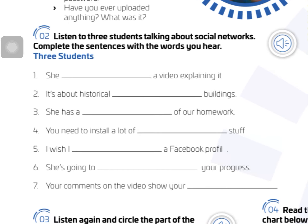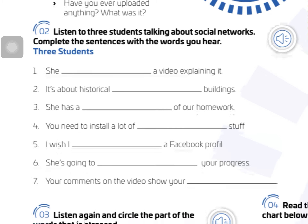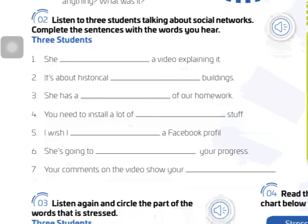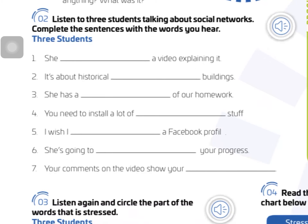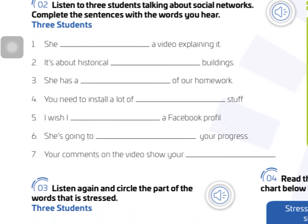Then we continue with the listening that says: Listen to three students talking about social networks. Complete the sentences with the words you hear. The title is 'Three students.' You have seven exercises that you have to solve.